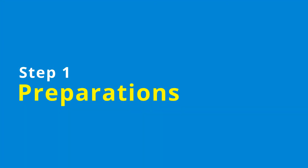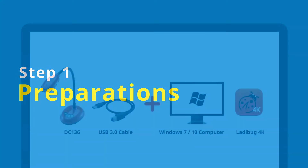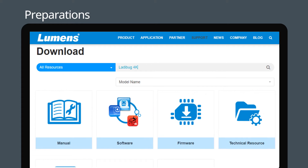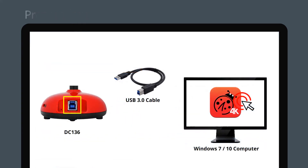Step 1: Preparations. Equipment required: DC136, USB 3.0 Cable, Windows 7 or Windows 10 computer, and LayDebug 4K software. For the software, please go to the Lumens website and search for LayDebug 4K. Download and install the software, then connect DC136 to the computer and open the LayDebug 4K software.